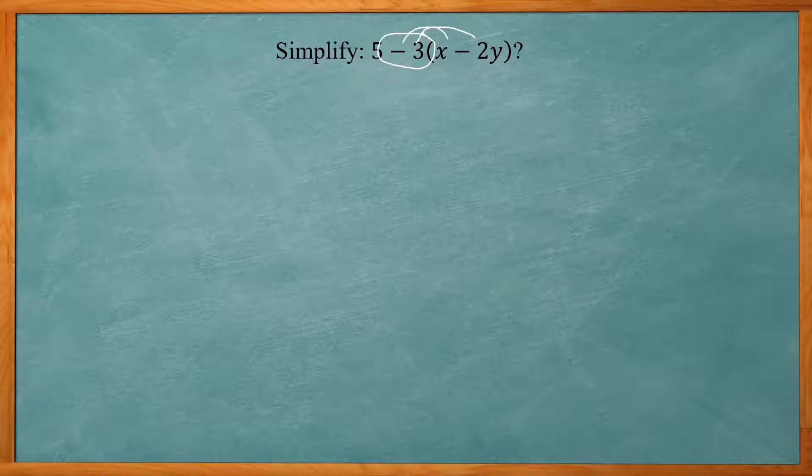So I'm going to do negative three times X and negative three times negative 2Y. And please don't forget the negatives. That's usually a common mistake people make. So negative three times X is negative 3X. And negative three times negative 2Y. Two negatives give you a positive when you multiply. So it's going to be positive 6Y.